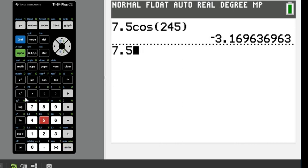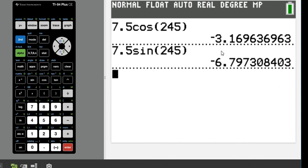Okay, and then for the second one, we would just do 7.5 sine 245. Okay, and we end up with negative 6.797.